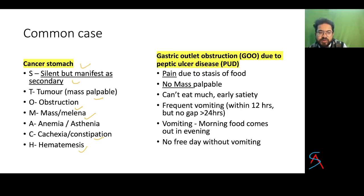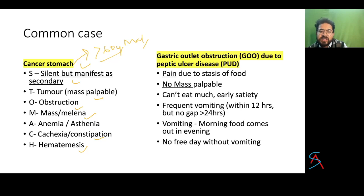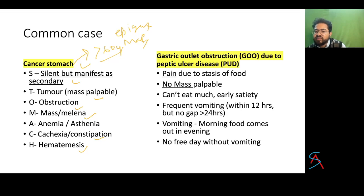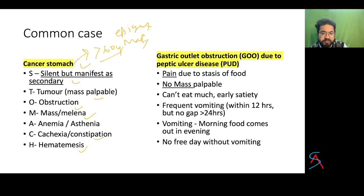Looking at the general profile of carcinoma stomach: mostly they will be 60-year-old males presenting with epigastric pain. Early symptoms of stomach cancer are generally indigestion, vague discomfort, sensation of fullness or heaviness after meals, loss of appetite, and feeling weak. Pain appears at the later stage in stomach cancer.